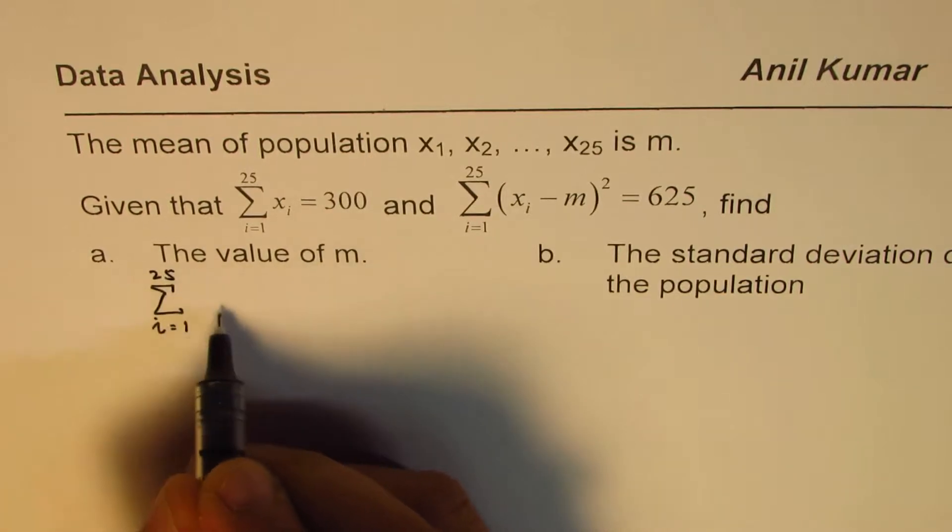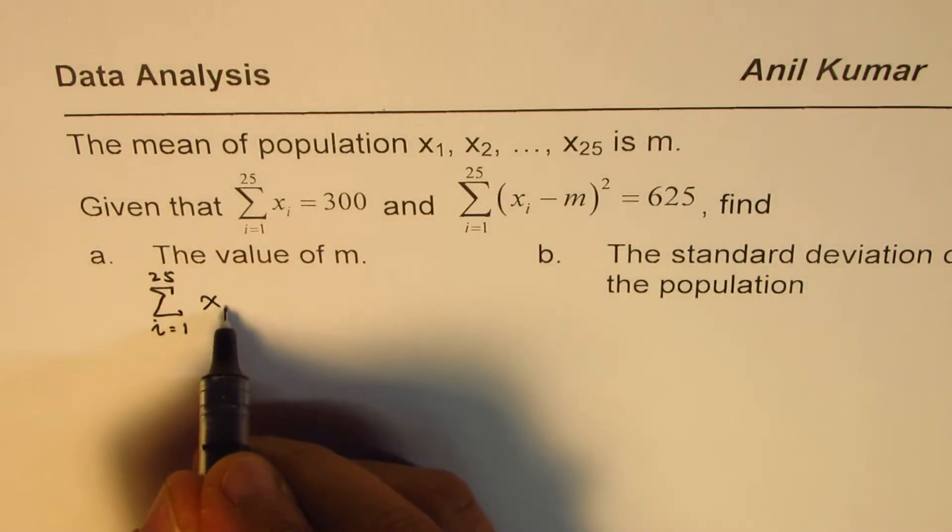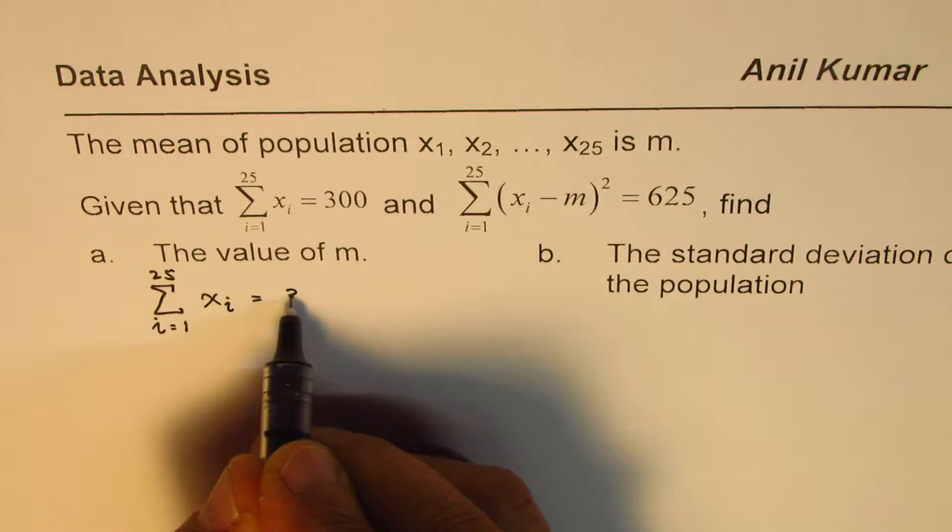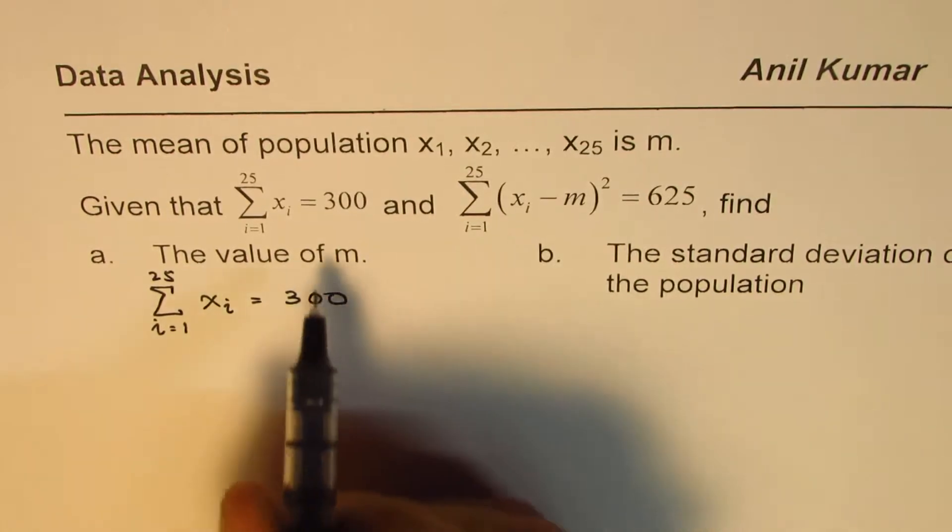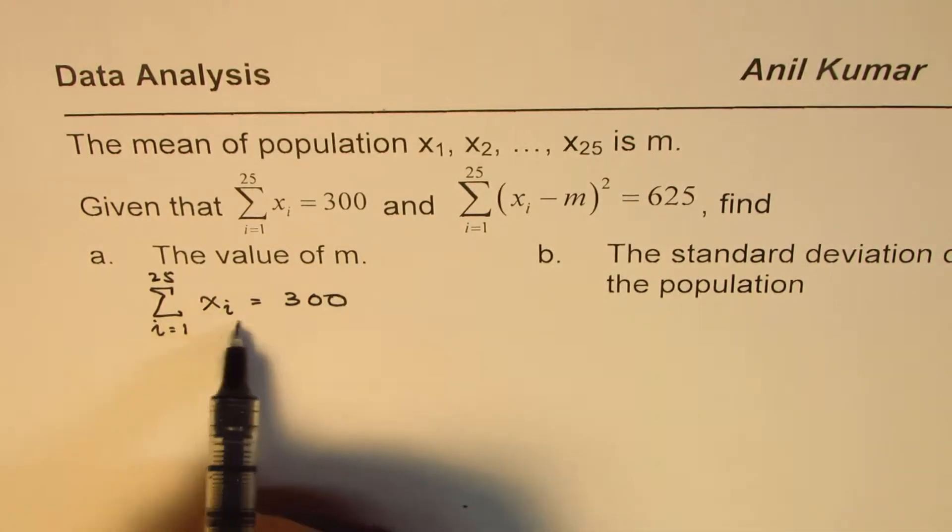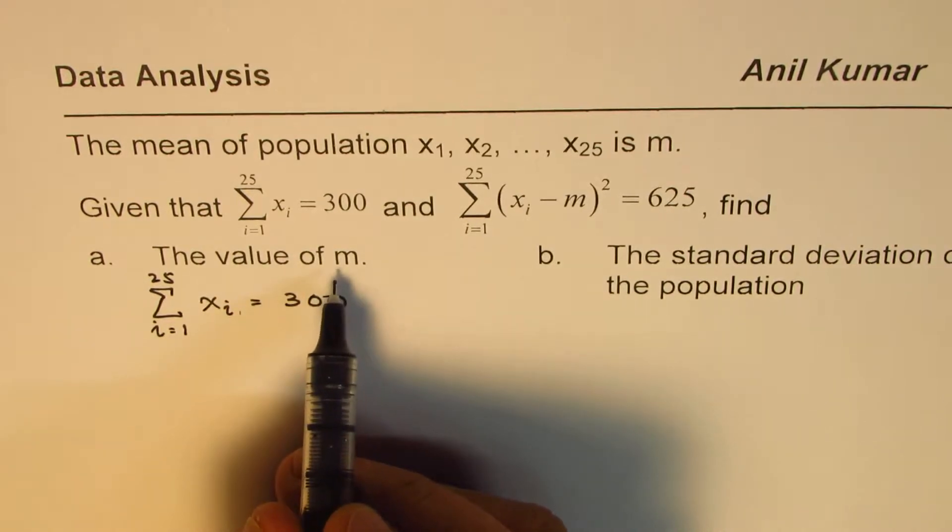We need to find the mean. It really means that mean times this number of elements which is 25 here, 1 to 25.